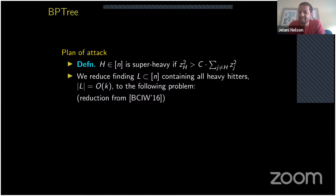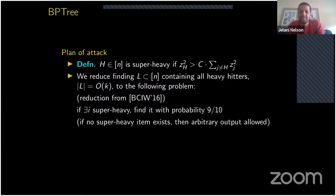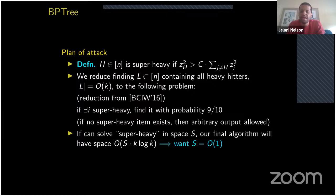A super-heavy item is almost the entire stream in an L2 sense. We use a reduction from prior work: to find all heavy hitters it suffices to reduce to the super-heavy problem — if a super-heavy item exists, find it with 90% probability; if not, output arbitrary output. Via this reduction, if you can solve super-heavy in space s, the final algorithm uses space s times k log k. We show how to solve super-heavy in constant memory, so the overall memory is k log k.